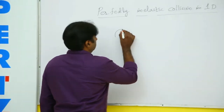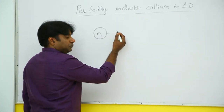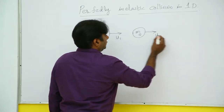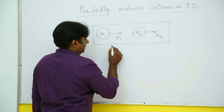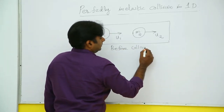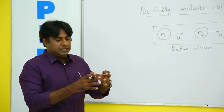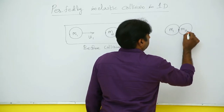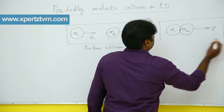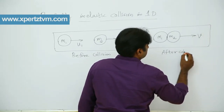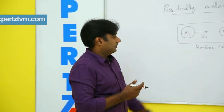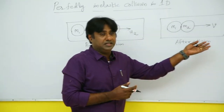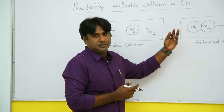Suppose you have a body of mass m1 which was initially moving with a velocity u1. In front of that you have another body m2 moving with a velocity u2. This is what happens before they collide. Perfectly inelastic means they collide and move as a single unit after the collision — m1 and m2 stick together and move with a common velocity v. This is after collision, moving along the same straight line — that is why it is collision in one dimension.